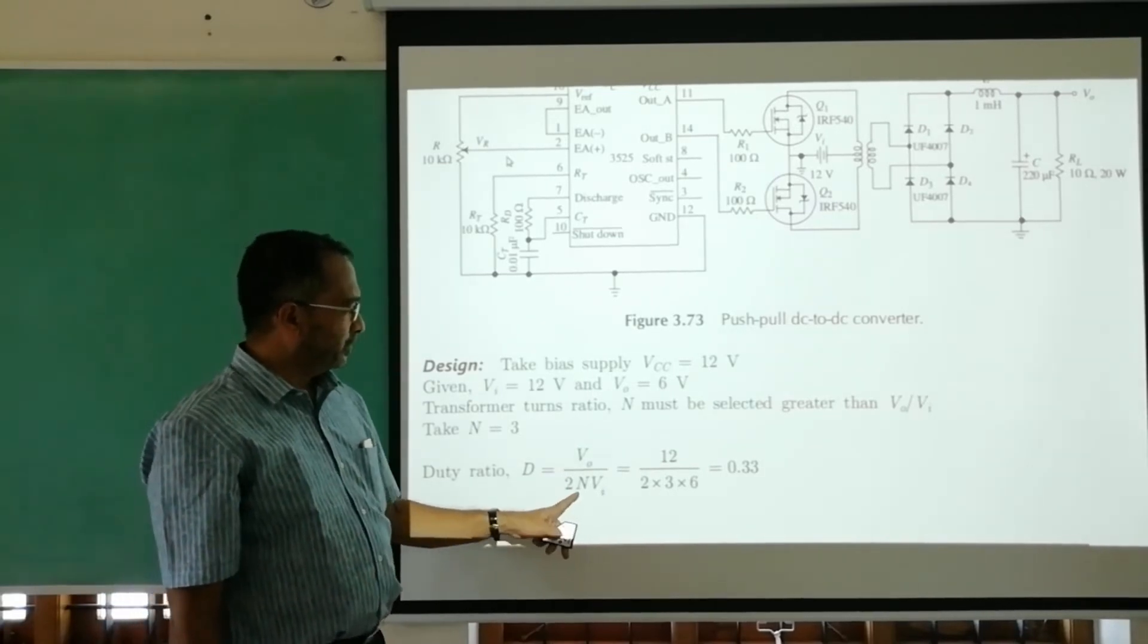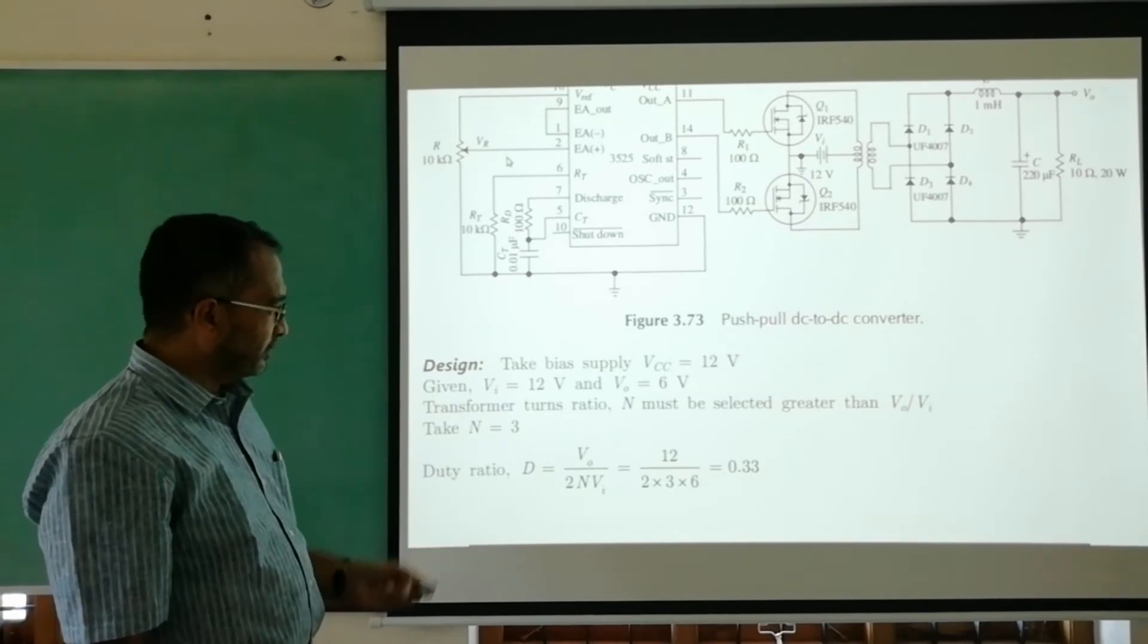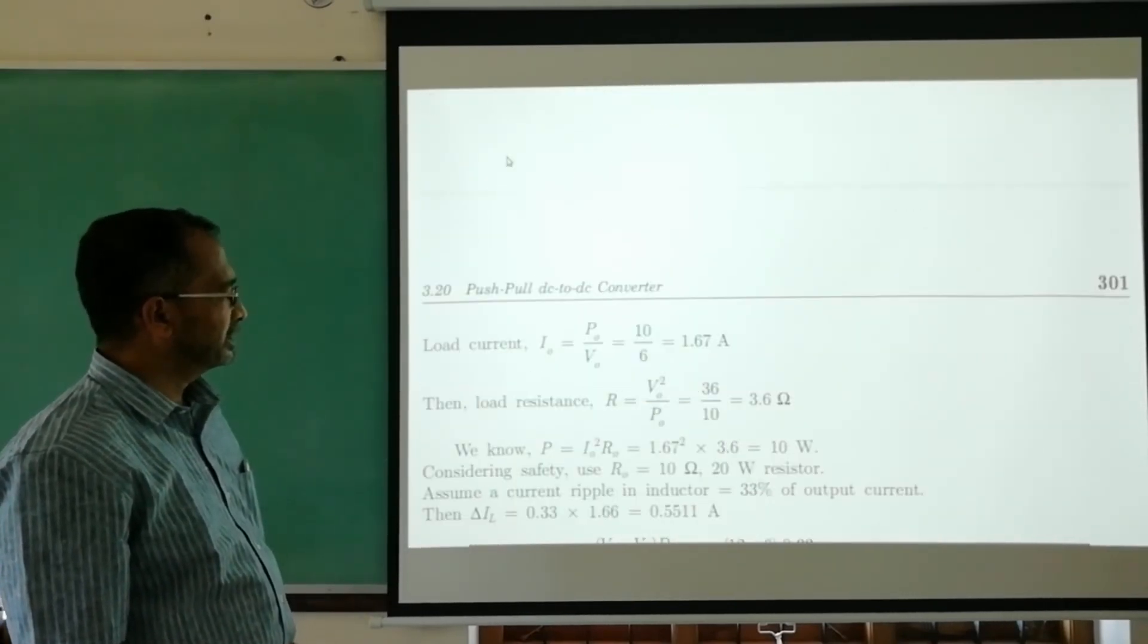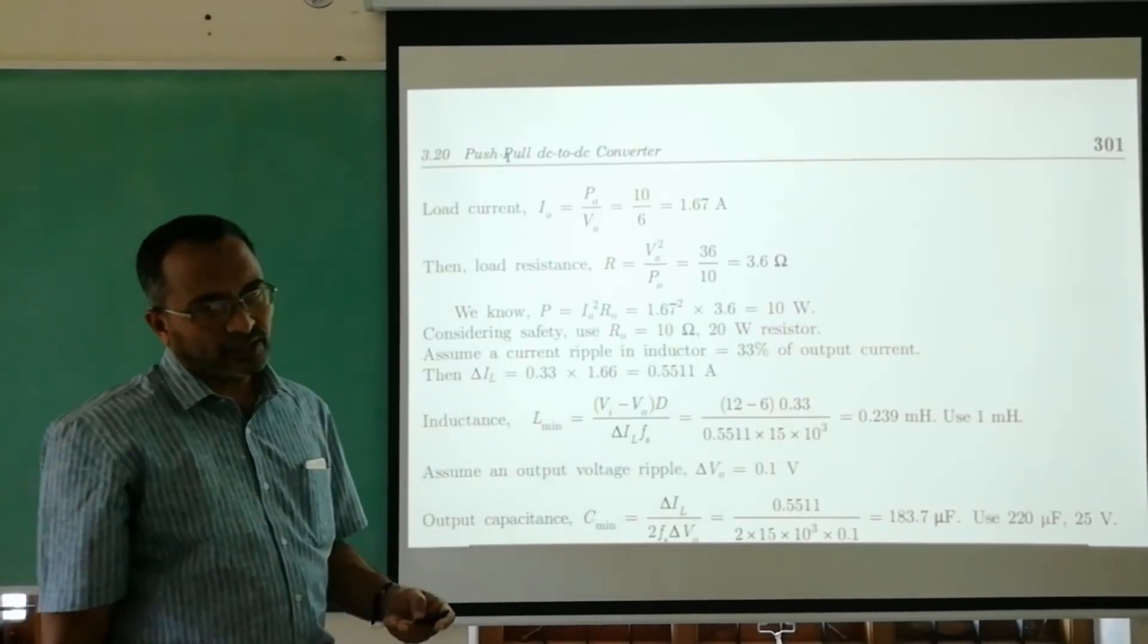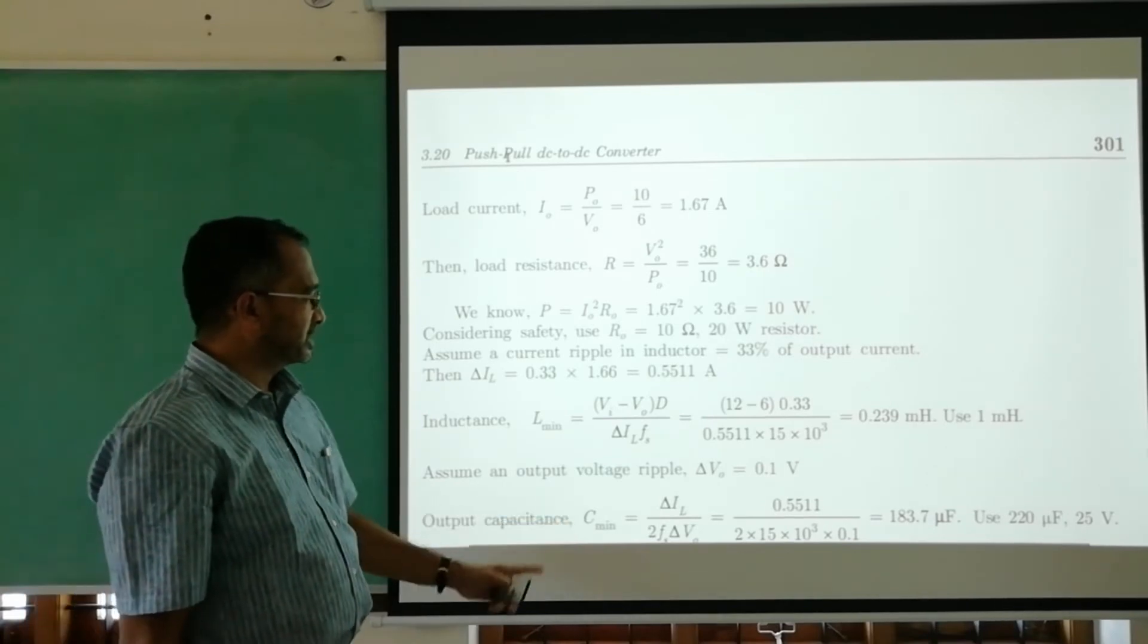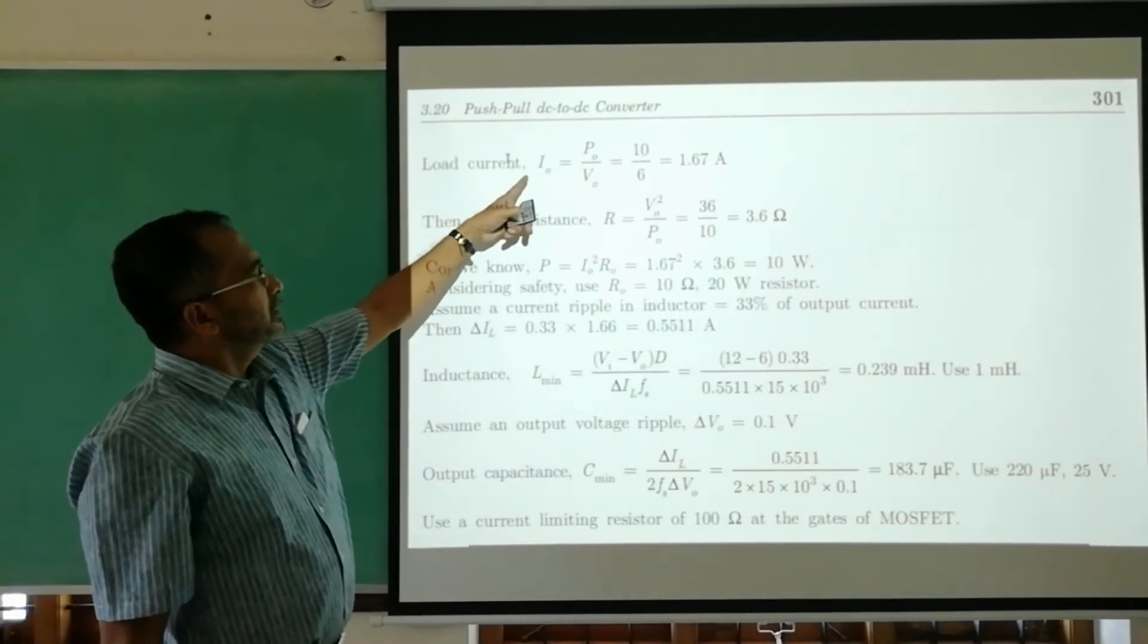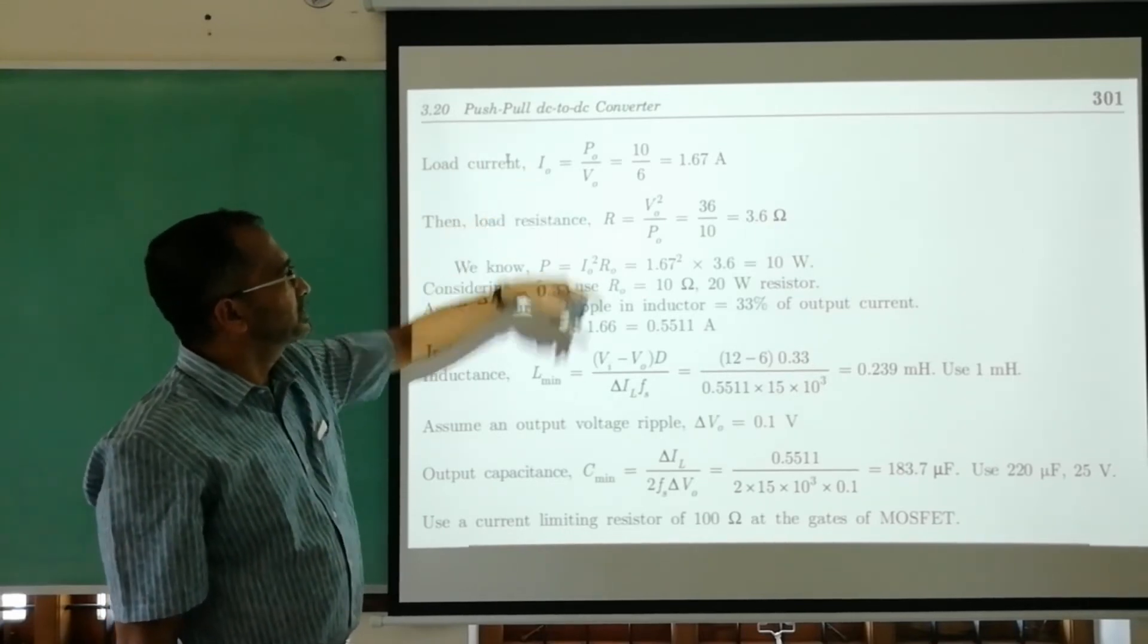The duty ratio Vo by 2Vi is selected as 0.33. If that is there, then we can get the minimum values for L minimum and C minimum - the values for coil and capacitance. We have equations here.